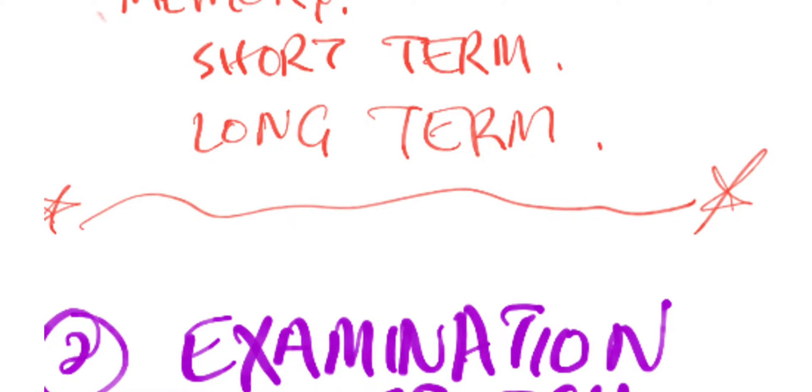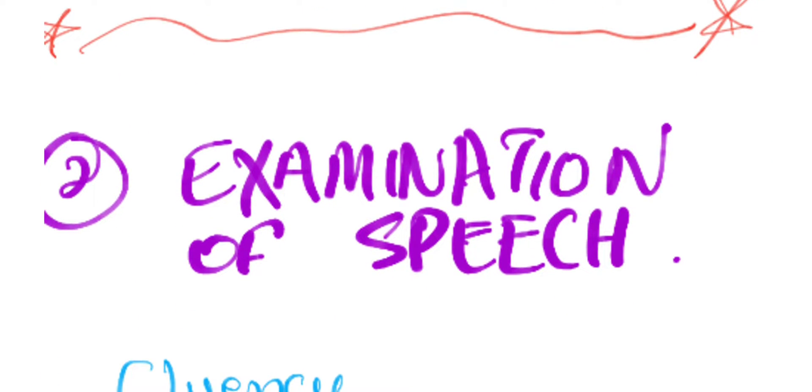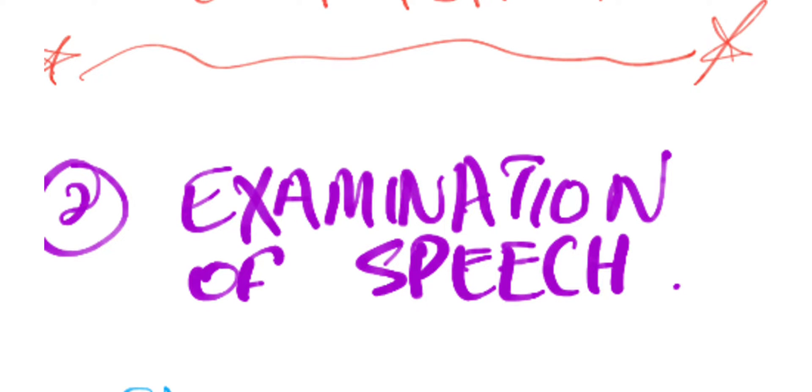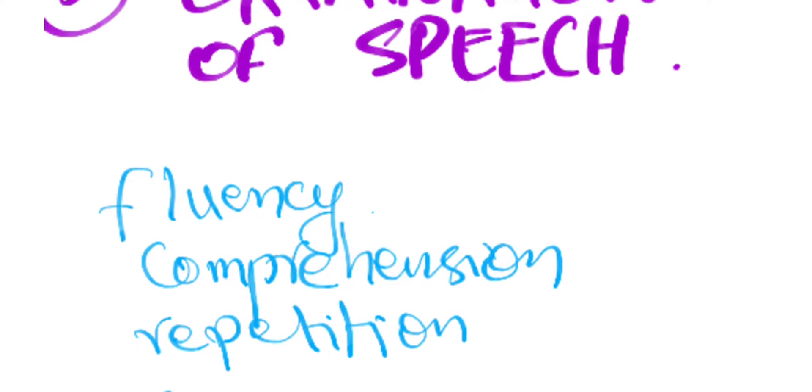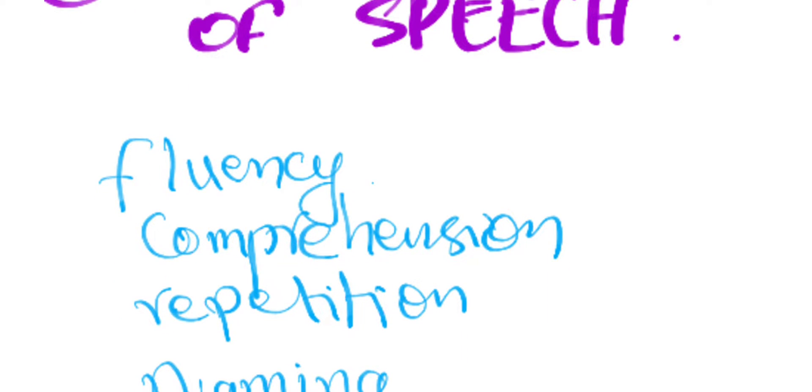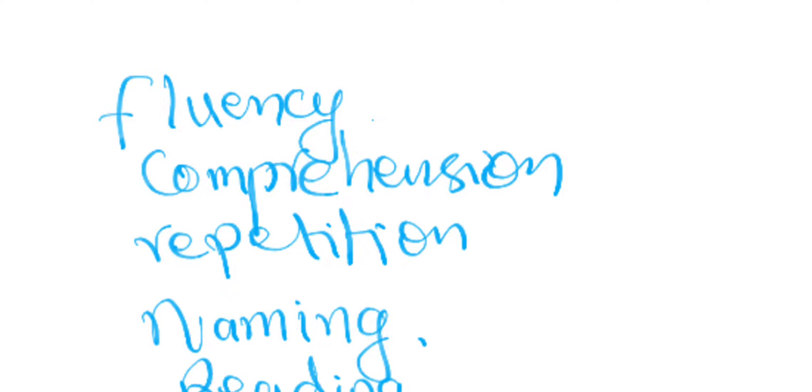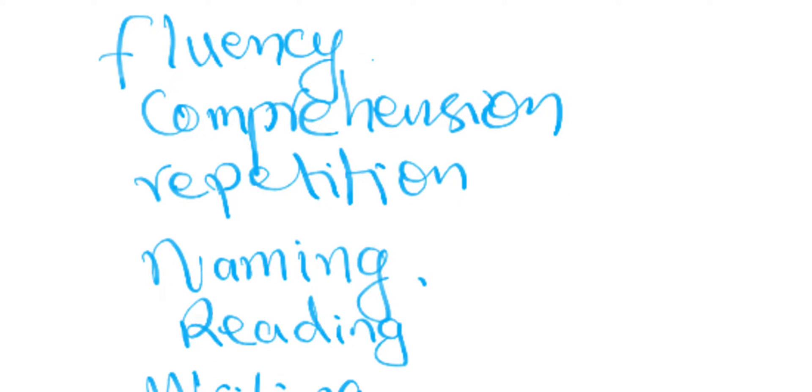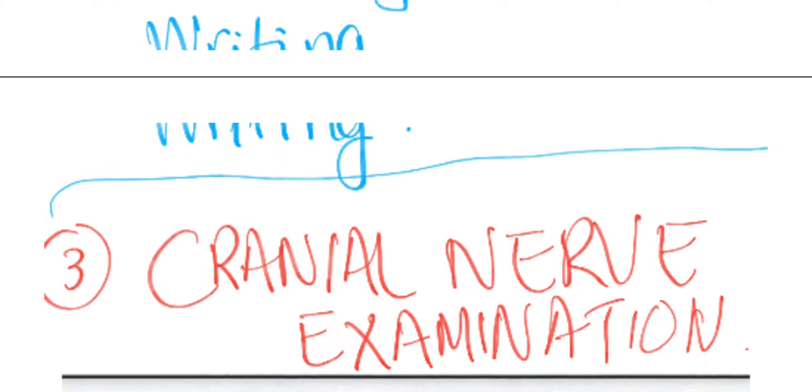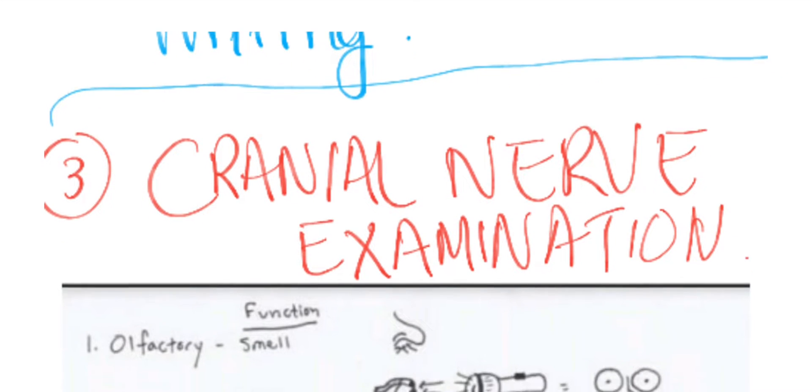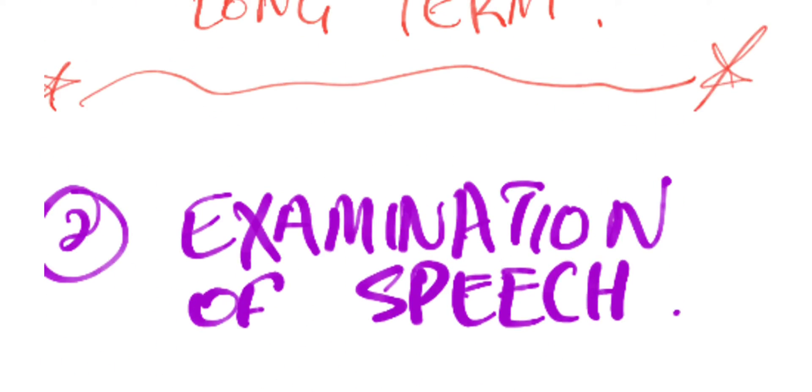Next up: examination of speech. You're not just seeing how the patient is talking. You've got to look for the fluency, for the comprehension of the patient. Can the patient repeat? Can the patient name people and objects? Can the patient read from a book or read numbers? And the writing of the patient: you will ask the patient to write and draw and check that as well. So first up was higher mental function, next up examination of speech.